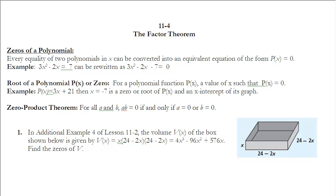First we're going to look at what the zeros of a polynomial are. Every two polynomials in terms of x can always be rewritten as one polynomial set equal to zero. For example, if I have 3x² - 2x = 7, I can rewrite that polynomial by setting it equal to zero — just subtracting 7 from both sides — and I can do that for any two polynomials set equal to each other.